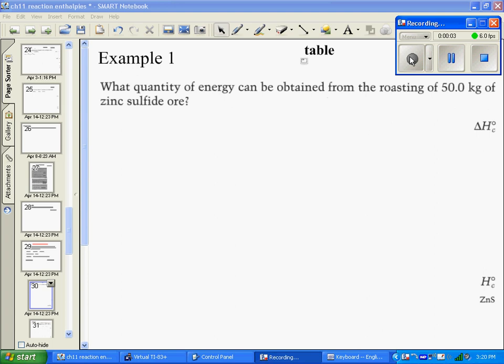Okay, I'm going to do an example here where we're going to work out the reaction enthalpy, the amount of energy that you get from a reaction, and we'll be using Hess's Law to get this answer. So in our example, we want to know what quantity of energy can be obtained from the roasting, or combustion, of 50 kilograms of zinc sulfide ore.